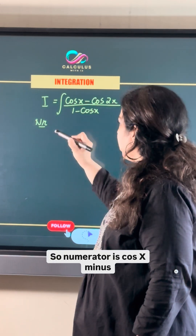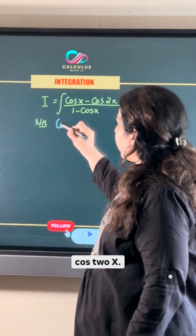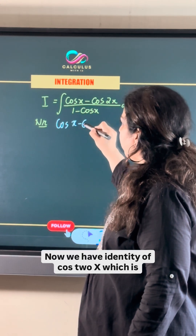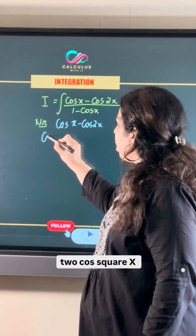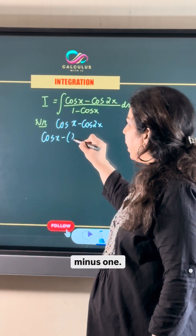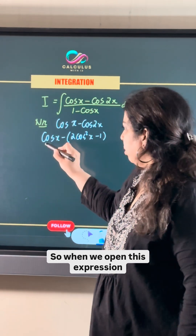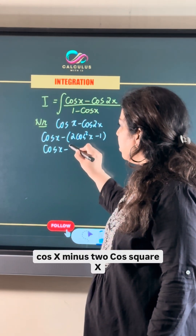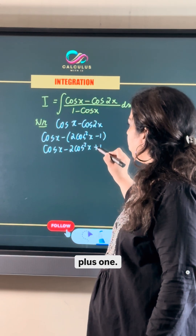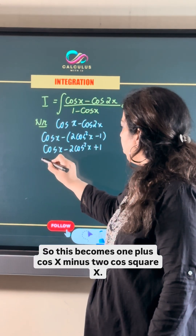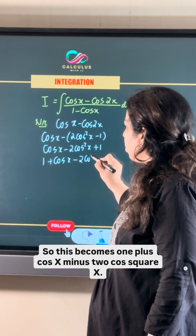The numerator is cos x minus cos 2x. We have the identity cos 2x = 2cos²x minus 1. When we substitute this, we get cos x minus (2cos²x minus 1), which becomes 1 plus cos x minus 2cos²x.